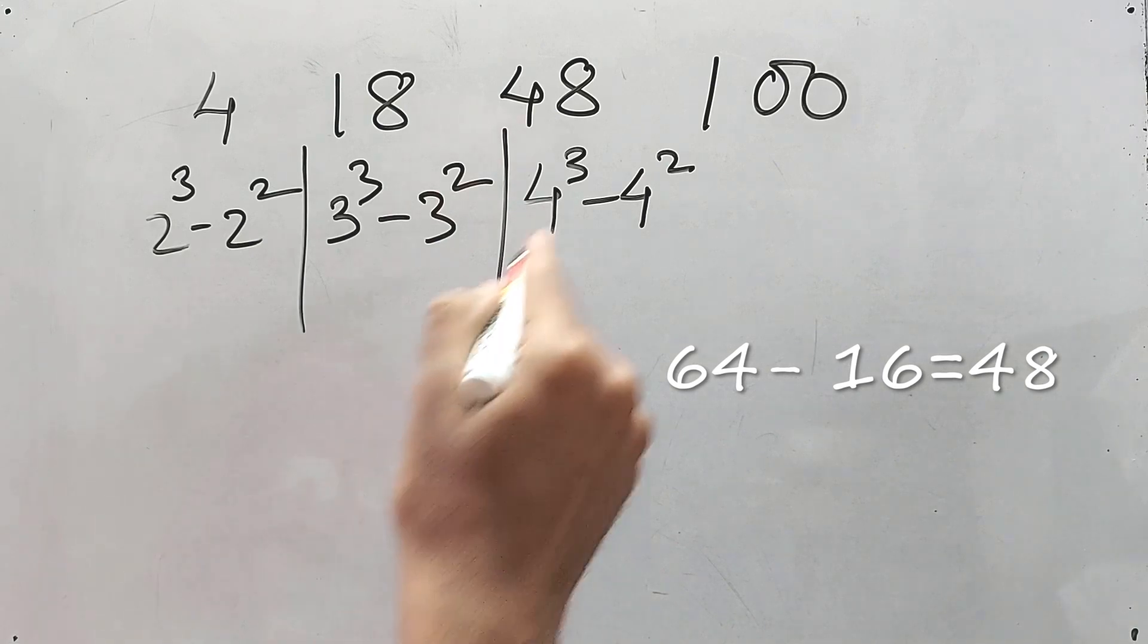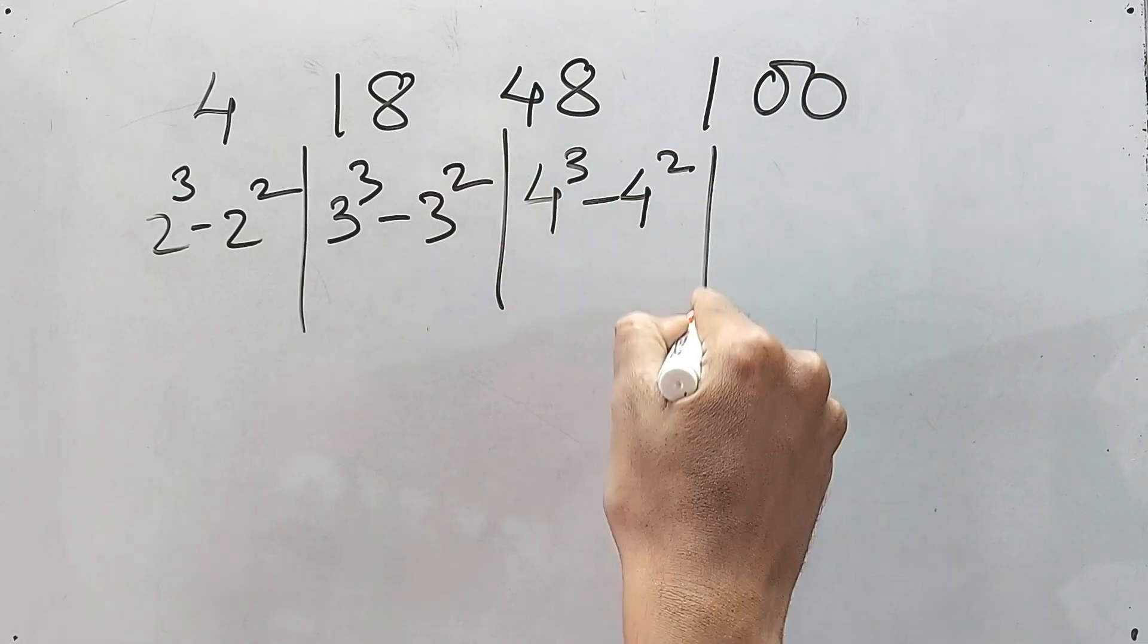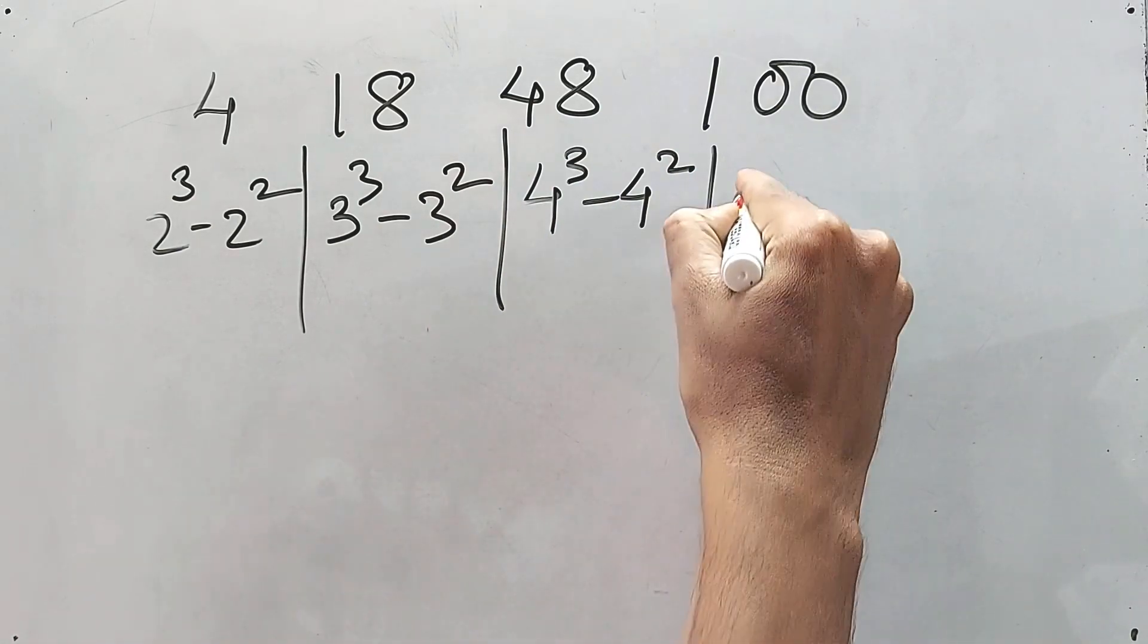What about this one? Again, 4 cube minus 4 square. 4 cube is, you tell me, 64 minus 16, right? So it is 48.